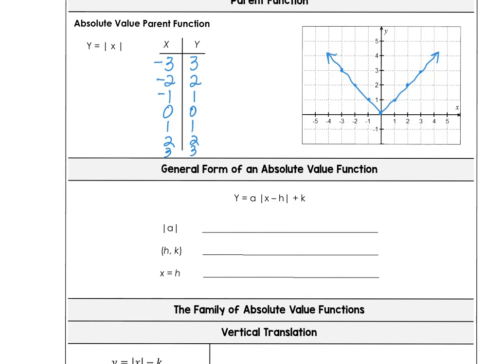When you have the general form a times the absolute value of x minus h plus k, the absolute value of a is the compression or stretch factor. We either have a compression or a stretch depending on whether it's a number larger than one or a fraction between zero and one.